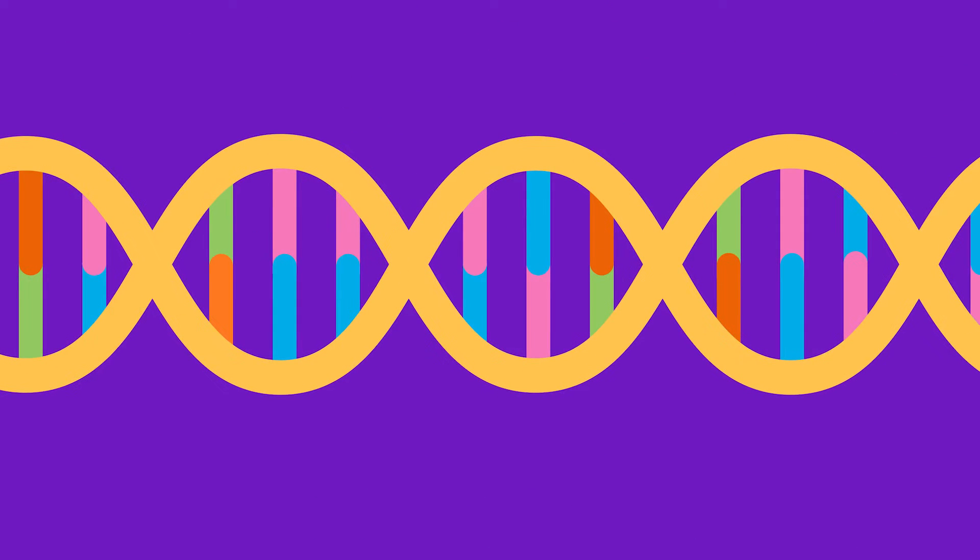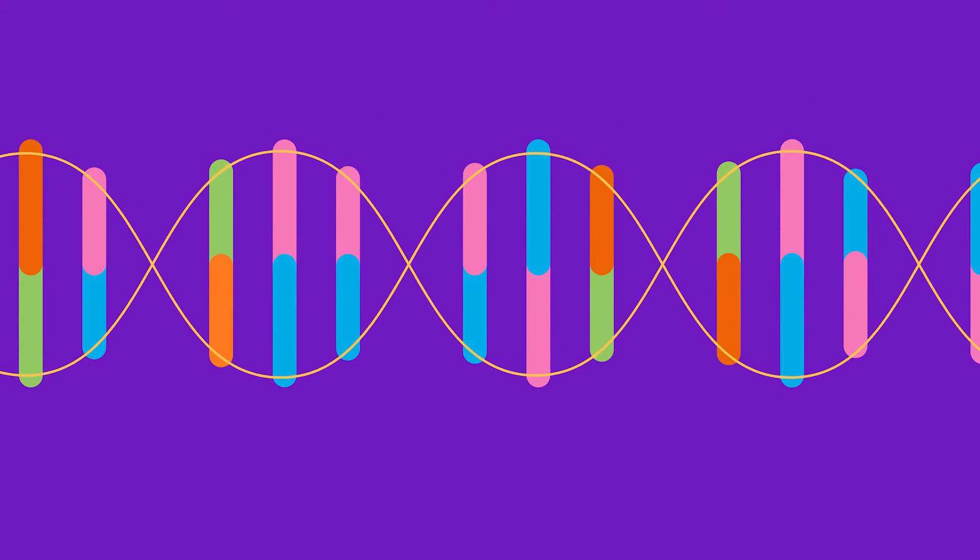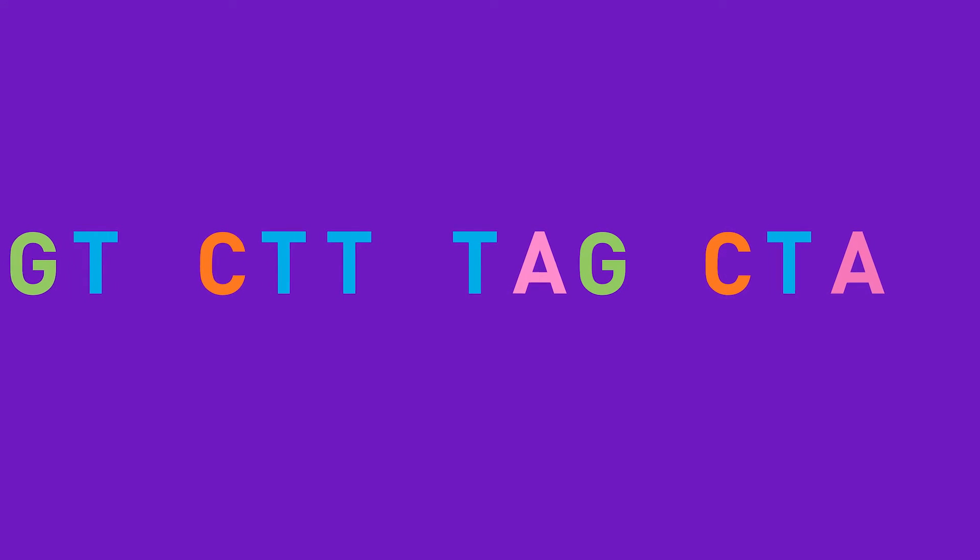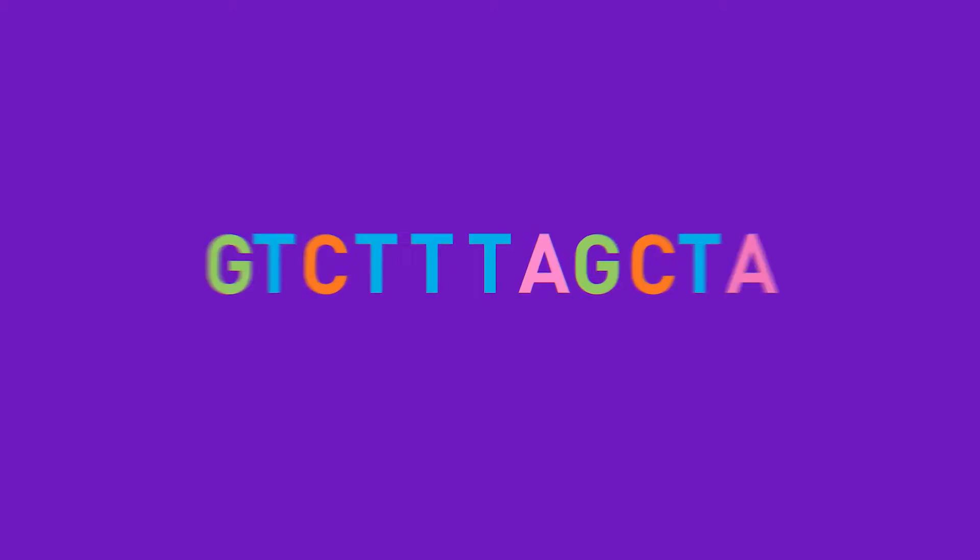If you look at the long thin molecule closely, you would see it is made up of four different building blocks, repeating in various orders. This is what makes our DNA a code, and this code tells our bodies how to grow, repair and change.